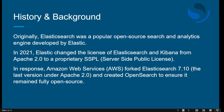Originally, Elasticsearch was a popular open-source search and analytics engine. In 2021, Elastic changed the license of Elasticsearch and Kibana from Apache 2.0 to the proprietary SSPL license. In response, Amazon Web Services forked Elasticsearch 7.10 — the latest Apache 2.0 version — and created OpenSearch to ensure it remained fully open source.